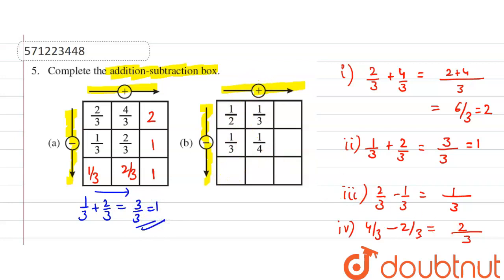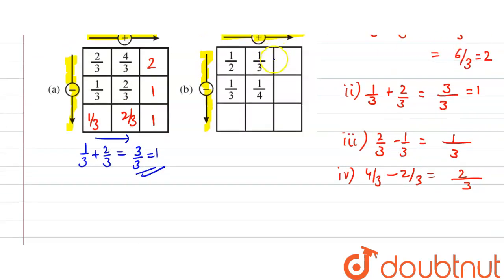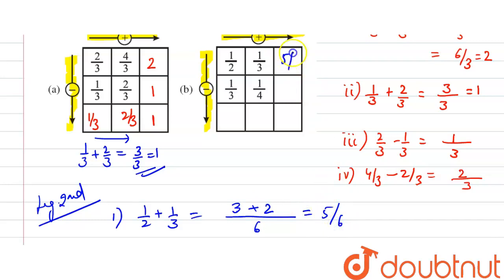Now the second part is figure two. The first calculation is 1/2 plus 1/3. The LCM of 2 and 3 is 6. Multiplying: 3 times 1 is 3, and 2 times 1 is 2, so 3 plus 2 equals 5/6.